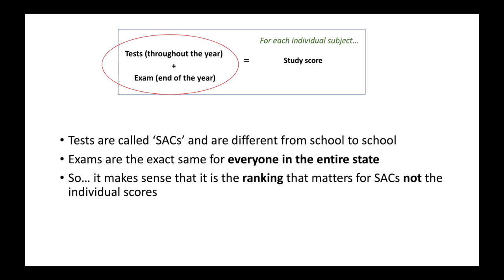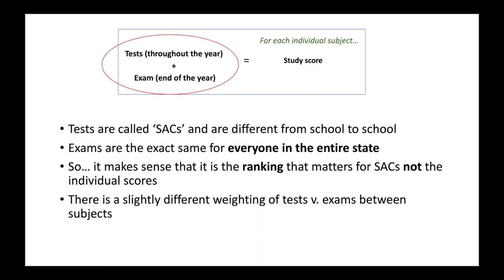Some subjects have two exams, like the maths ones, and some subjects have one. Keeping in mind that exams are exactly the same for everyone whereas SACs vary a lot, it makes sense that for those tests throughout the year, it is more the student's ranking that matters — how they sit within their group of students — rather than the individual scores, because those will probably vary a bit. There is also a slightly different weighting between the tests throughout the year and the exam at the end of the year — they both contribute to the study score, but for some subjects the exam contributes a bit more, and for some the tests contribute a bit more.